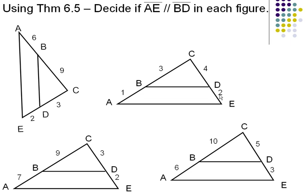3 to 1, we have a 3 to 1 ratio and a 4 to 2. Those don't match up. In this figure here, there is no parallel between BD and AE.